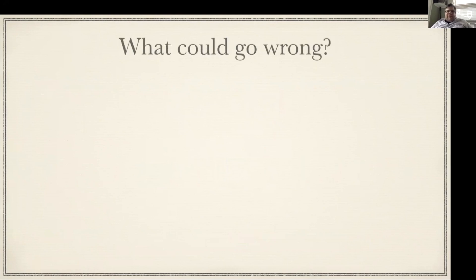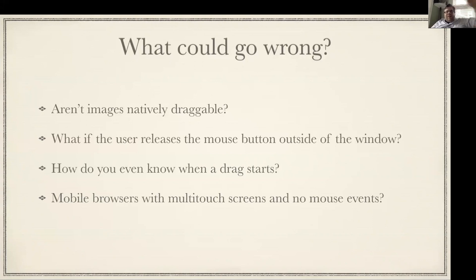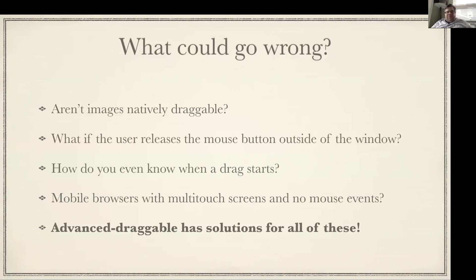Now that sounds very easy — just take some native DOM events and fire some synthetic DOM events — but there are some pitfalls. First, images are always natively draggable by default, so if you click and drag on an image even within your simulated drag target, it's still going to do the native image drag rather than the synthetic one. If the user releases the mouse button outside of the window, you have no way of knowing this; when the pointer re-enters, you'll still be doing the drag operation even though the mouse button's up — that's not desirable. You might not know when a drag starts other than having a well-defined way of doing so. And mobile browsers complicate things because by default there are no mouse events — there are multi-touch screens. But the nice thing is I wrote a library called advanced-draggable and I have already solved all of these problems.